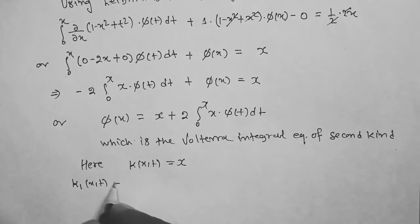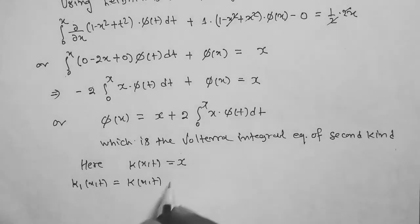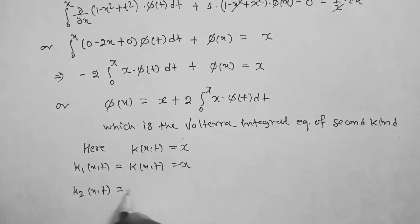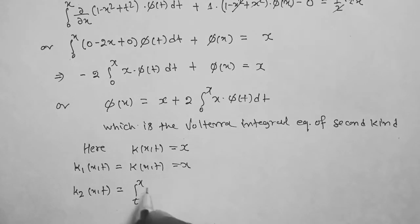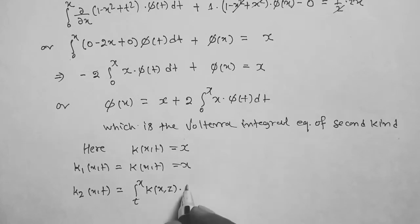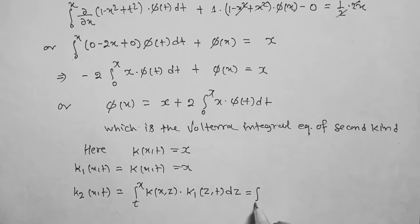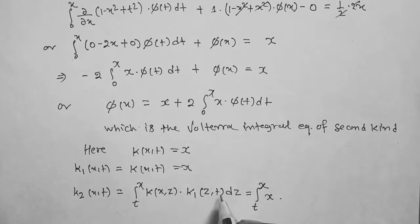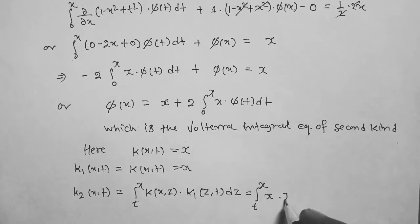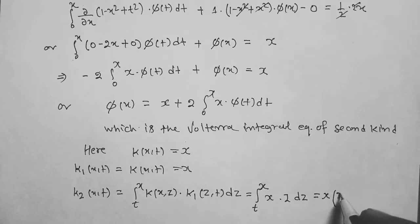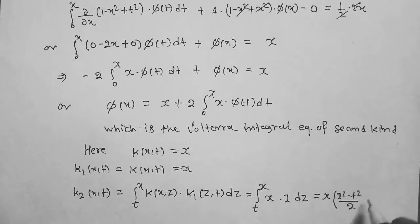The kernel k(x,t) equals x. The first iterated kernel k₁(x,t) equals k(x,t) equals x. The second iterated kernel k₂(x,t) equals the integral from t to x of k(x,z)·k₁(z,t) dz, which equals the integral from t to x of x times z dz, giving x(x² minus t²)/2 upon integration.